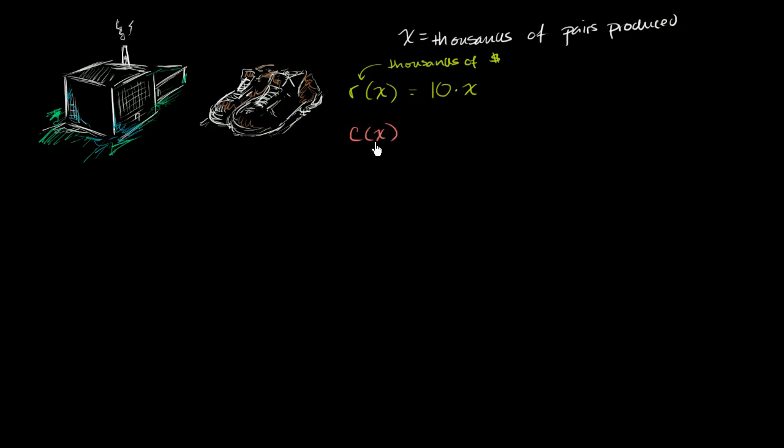They say it is the number of the thousands of pairs you produce cubed minus 6 times the thousands of pairs you produce squared plus 15 times the thousands of pairs that you produce. And once again, this is also going to be in thousands of dollars.